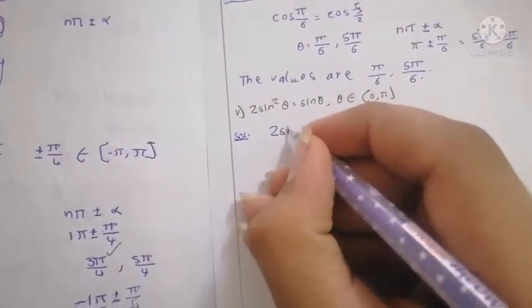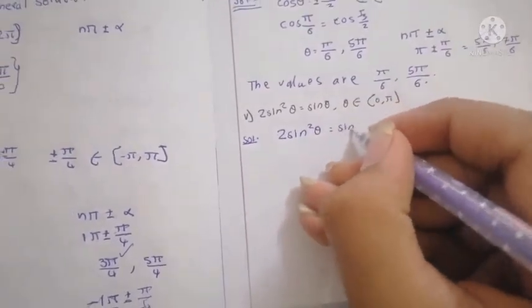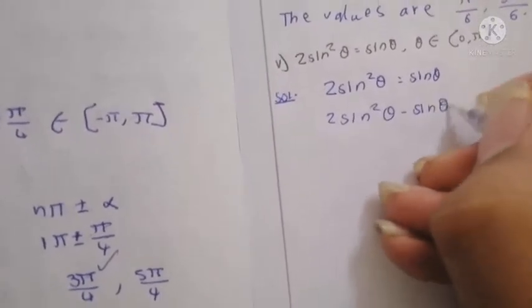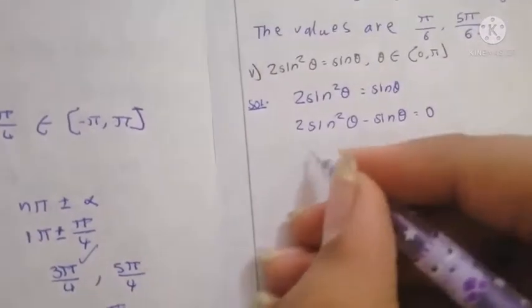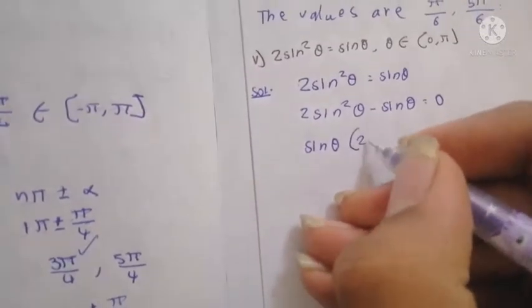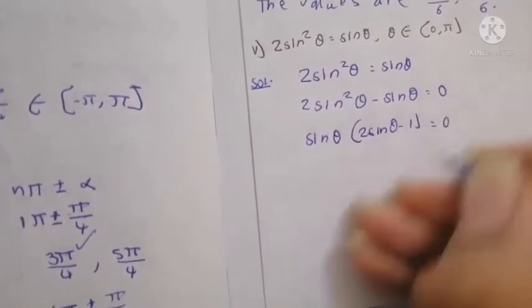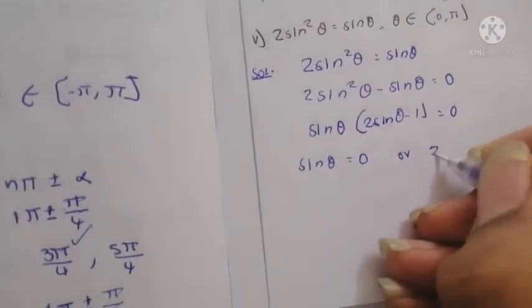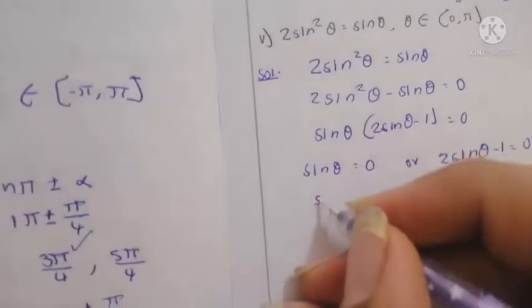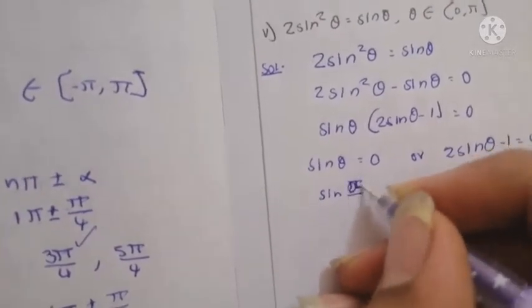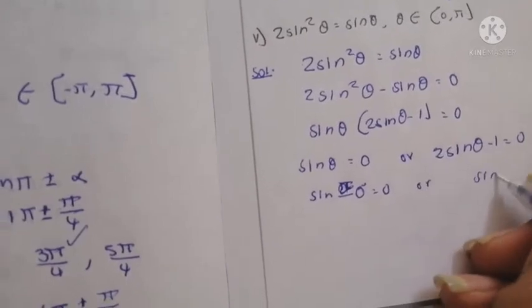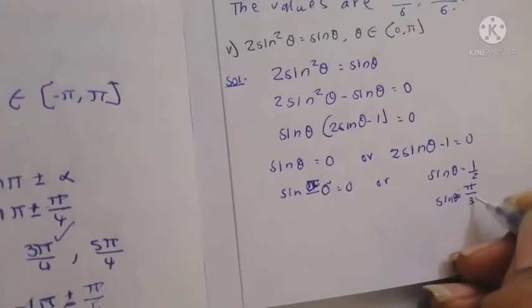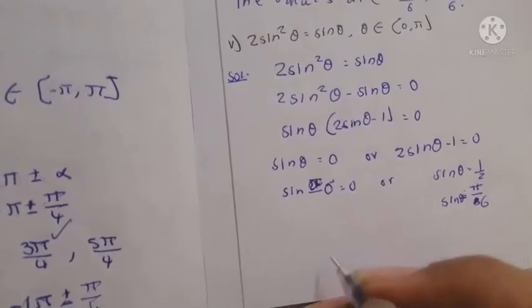Next problem: 2sin²θ = sinθ (given interval). Rearranging: 2sin²θ - sinθ = 0. Factoring: sinθ(2sinθ - 1) = 0. So sinθ = 0 or 2sinθ - 1 = 0.